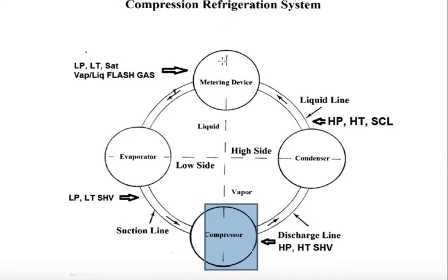The metering device then discharges the refrigerant into the evaporator. The evaporator absorbs heat from the surrounding space and boils that refrigerant off into a vapor. As it leaves the evaporator, it's a low pressure, low temperature, superheated vapor, because it gains some sensible heat after the evaporation process is done, and it moves into the suction line and returns to the compressor.